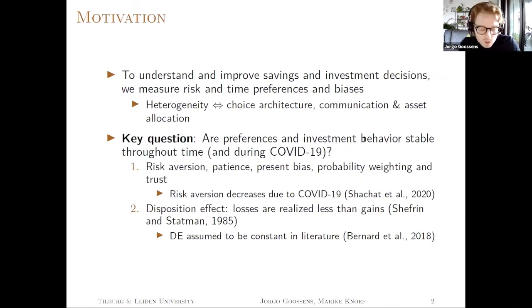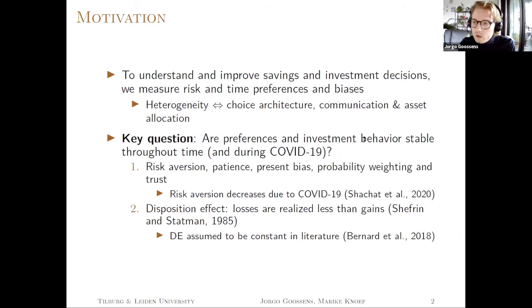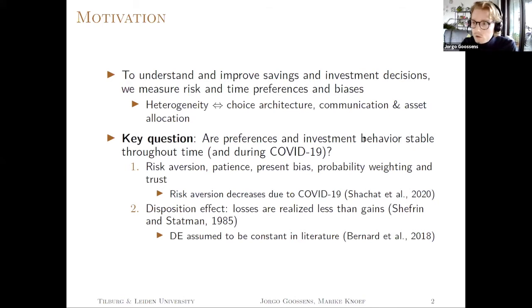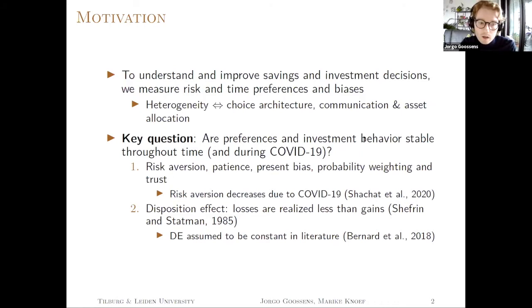So what was the original motivation for this paper? We initially wanted to measure risk and time preferences and biases. Given that we know how risk aversion looks like, patience, and present bias, we can understand and improve savings and investment decisions from a pension fund participant point of view. The idea was that if we assess the heterogeneity of these preferences in a large representative sample for the Netherlands, we might improve choice architecture, communication, and asset allocation.